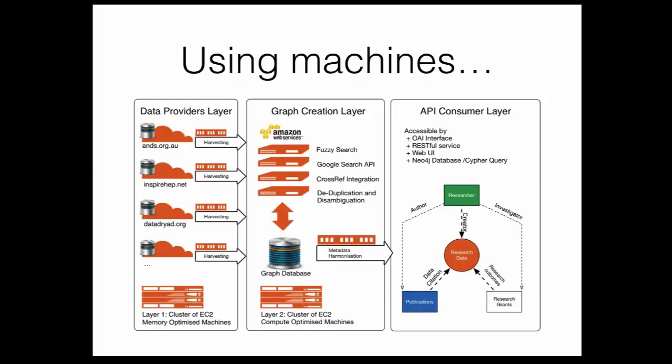We also built the platform to be as much as possible agnostic to schema format, so it can basically digest many different formats. The actual architecture of this system contains three different layers: we have the harvester, we have the graph creation layer which does the bulk of the job, and it has different integrations to external systems. It uses a Google API and different search technologies to make all the connections happen. Then we push this information into the API consumer layer where you can ingest this information into your system using our API, or there is a browser interface where you can explore the connections.